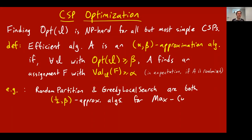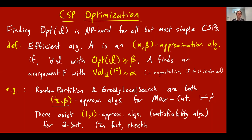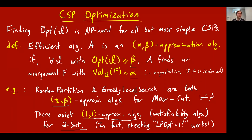There are simpler examples of algorithms for max cut than Goemans-Williamson. For example, randomly partitioning the vertices, or doing local search in a greedy way — going through vertices one by one and putting them on the better side. As we saw before, at least for random partition, these are a half-comma-beta approximation algorithms for all beta, because they're guaranteed to cut at least half the edges no matter what the optimum is. There also exist one-comma-one approximation algorithms for 2SAT: an algorithm guaranteed to find an assignment of value one whenever the optimum is one — i.e., a satisfiability algorithm that finds satisfying assignments when they exist.